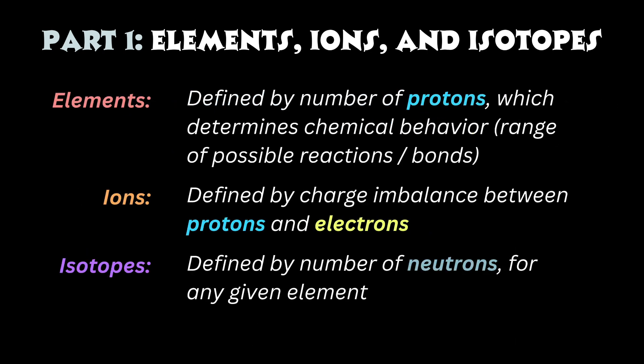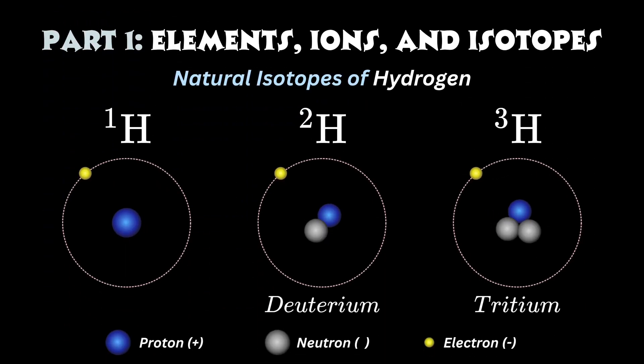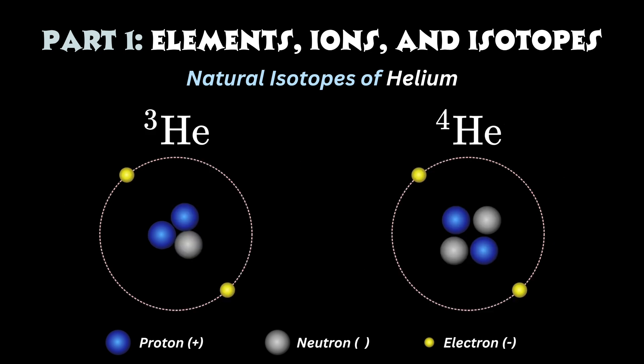Finally, we get to isotopes, which for any given element are defined by the number of neutrons in the nucleus. Hydrogen always has one proton, but naturally occurs as three isotopes: ¹H, which has zero neutrons; ²H, which has one neutron; and ³H, which has two neutrons. You may have already noticed that the isotope number — also called the atomic mass — is defined as the sum of protons and neutrons. By comparison, helium has two isotopes: ³He with one neutron, and ⁴He with two neutrons.